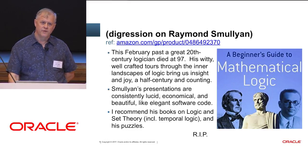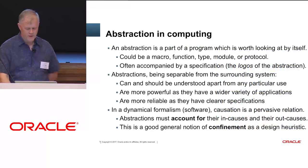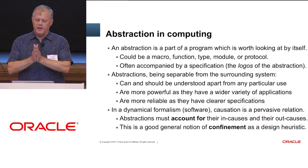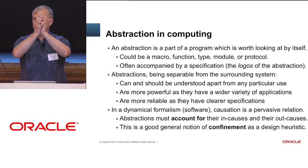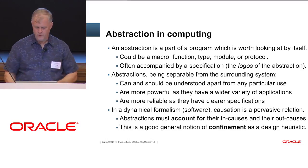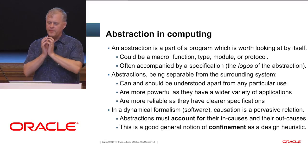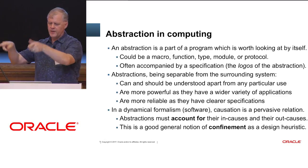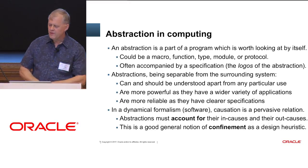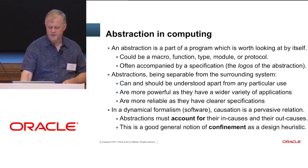His book on set theory introduced me to temporal logic in a charming and useful way that set me up for appreciating some of Leslie Lamport's work. Back to abstraction: with respect to computing, an abstraction is when you pull out a piece of a program that's worth looking at by itself. Since programs are formal entities, a formal account of a piece of a program is probably just a fragment of that program. Abstractions are separable, and you need to be able to make true statements about a piece of code even though it's integrated with and entangled with a much larger system. The role of specification is very important there.